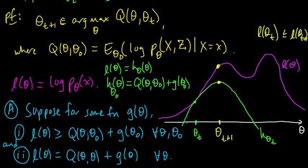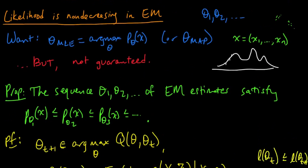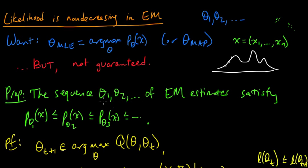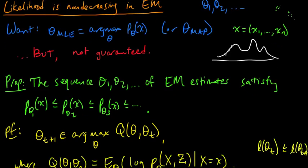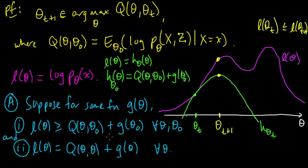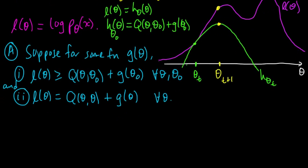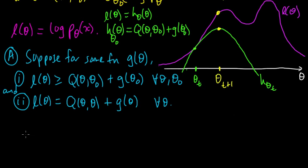We're talking about a guarantee that can be proven for the EM algorithm, namely that the sequence of estimates produced by EM gives a non-decreasing sequence of likelihoods. We just drew the picture here to see why these assumptions, if these assumptions hold for the log likelihood and this q function, why that implies this guarantee. And next, we're going to formalize this. It's actually just a very simple thing, but let's write it down.